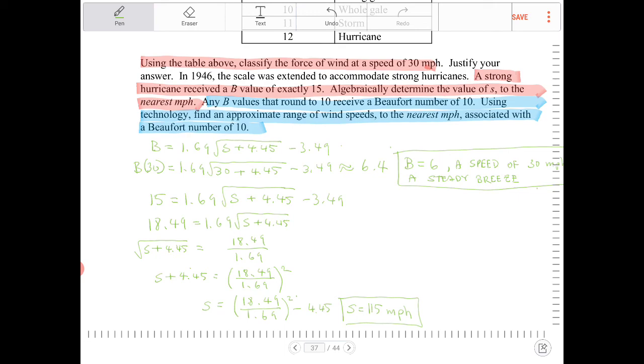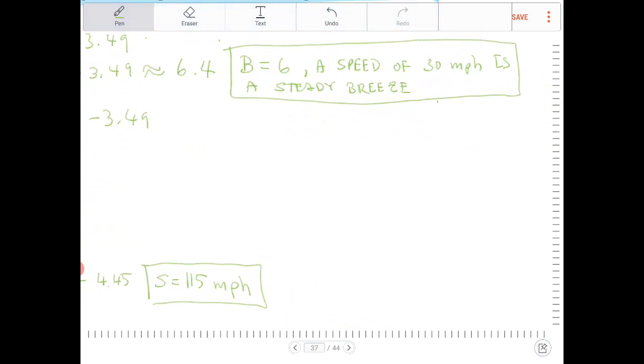The next part. Any B values that round to 10 receive a Beaufort number of 10. Using technology, find an approximate range of wind speeds to the nearest mile per hour associated with a Beaufort number of 10. So a Beaufort number equaling to 9.5 to 10.49 will be equivalent to b equal to 10. So in other words, we're looking for wind speeds with Beaufort numbers ranging from 9.5 to 10.49.